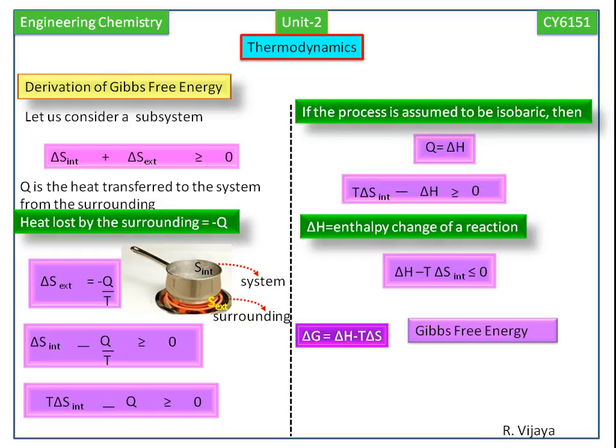Delta H is the enthalpy change of a system. Delta S is the entropy change of the system.